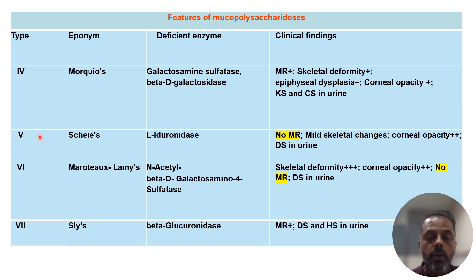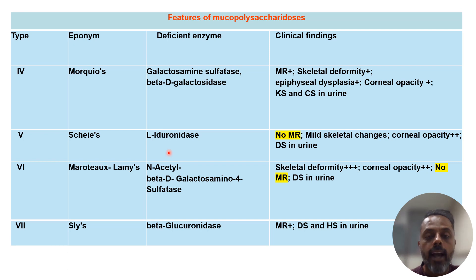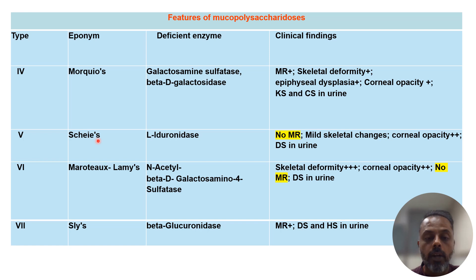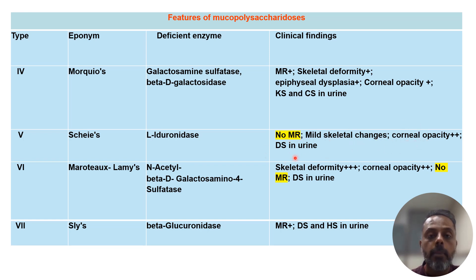Type 5 mucopolysaccharidosis is Scheie's disease, also associated with deficiency of the alpha-L-iduronidase enzyme — the same enzyme deficient in Hurler's syndrome (type 1). So deficiency of alpha-L-iduronidase can cause either type 1 (Hurler's) or type 5 (Scheie's) mucopolysaccharidosis. The characteristic feature of Scheie's syndrome is that there is NO mental retardation. It is associated with skeletal changes, corneal opacity, and excretion of dermatan sulfate in the urine.